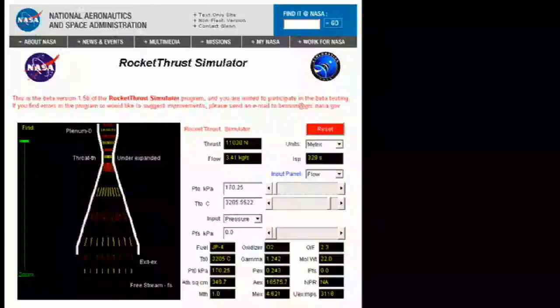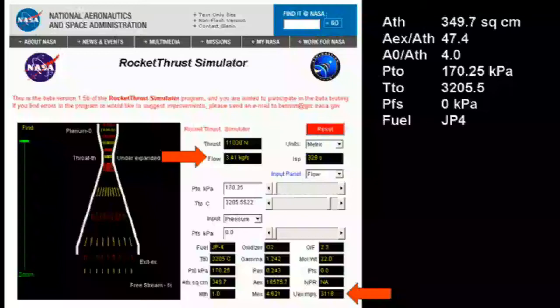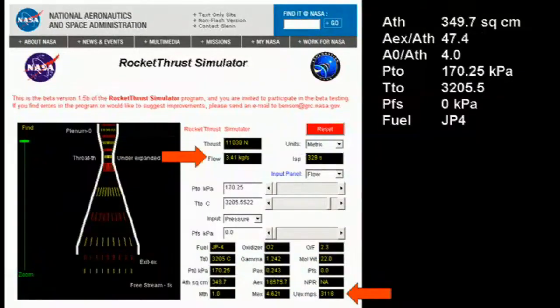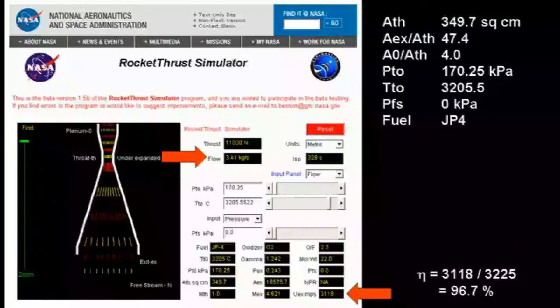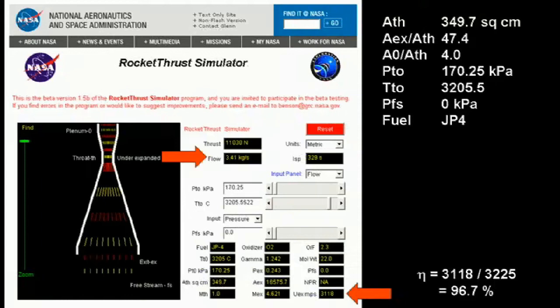This, or a similar widget, is probably where Gilliam got his numbers. If you plug in the values I list on the right, you get a rocket with about 11 kN thrust, and a flow rate of 3.41 kg per second. The exit velocity is 3,118 m per second, slightly lower than the effective velocity of 3,225 m per second, giving this engine an efficiency of 96.7%.